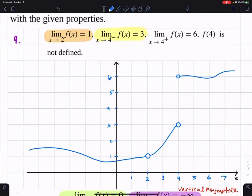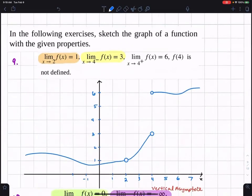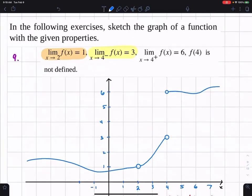But f of 4 is not defined. So we don't plot f of 4 then? No, because f of 4 is undefined, but it didn't say anything about f of 2. Maybe that's undefined also. But I mean, it satisfies that. You just have to satisfy those properties.